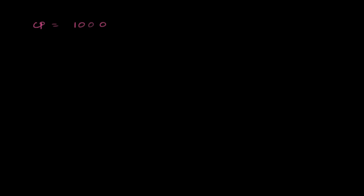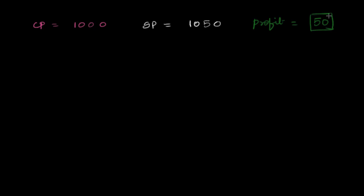Let's look at one more problem. This time the cost price is 1000 — you're buying a bigger thing — and your selling price is 1050. How much profit did you make? The profit you made is 50 rupees: 1050 minus 1000. So you made a 50 rupee profit — bigger than the previous 2 rupee profit. But let's see what the profit percentage is. You know everything you need to calculate it, so pause the video and find your answer.